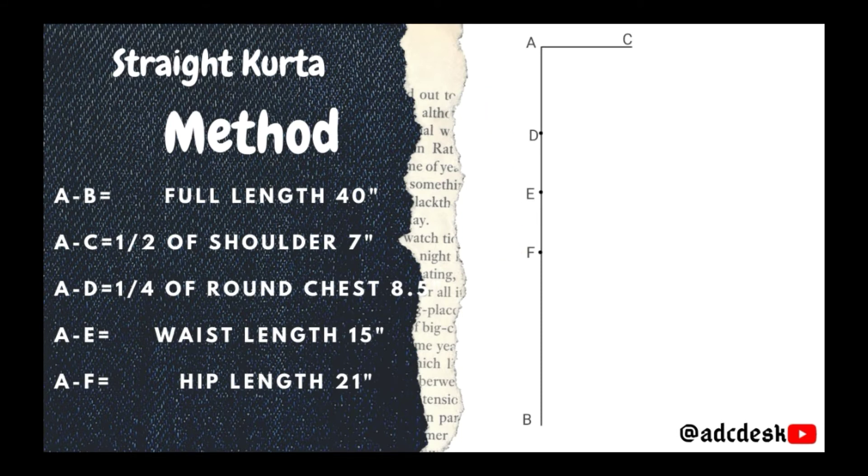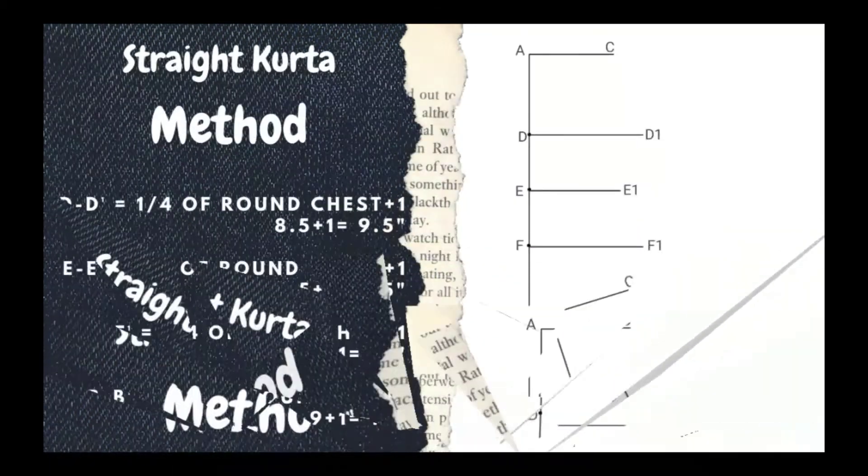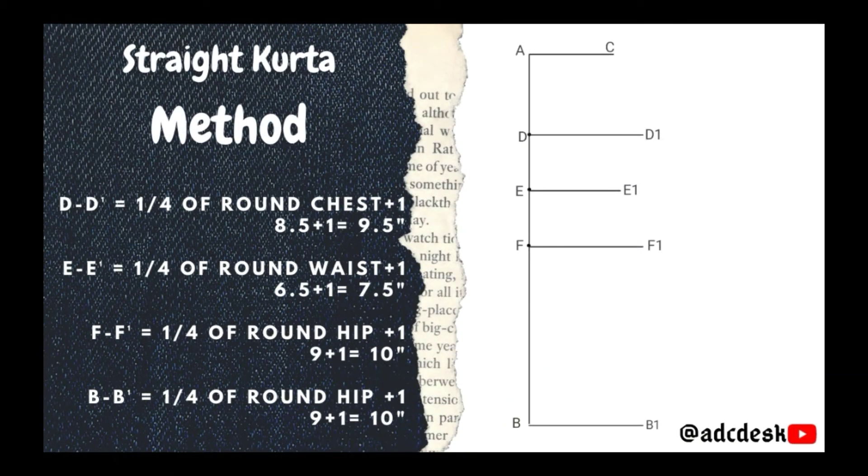Then comes the second step where we will take the horizontal measurements. D to D', one-fourth of round chest plus one. We will add one inch extra for ease, because we are not making it skin-tight or skin-fitted. So here we will add one inch extra for ease. So 8.5 plus 1 equals 9.5.